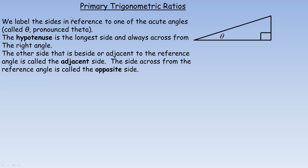Before we get into what they are, in any right-angled triangle, we always refer to a particular reference angle. I'm going to use the angle symbol theta here — it's a Greek letter often used to represent some unknown angle. It's just a convention that's used; we could use any symbol we wanted.